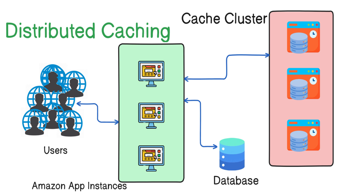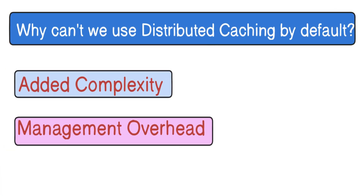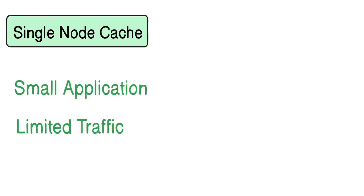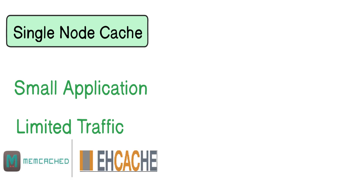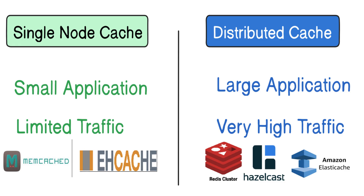So if distributed caching is so good, then why aren't we using it everywhere instead of a single instance cache? Just like other things, distributed caching also has specific use cases. It is similar to whether you should use a monolithic application architecture or microservices. Microservices are great but come with great complexity to manage. Similarly, distributed caching is great but comes with added complexity and management. If your application is small with limited traffic, a single node cache like Memcached or EhCache might be enough. But for high-traffic systems like Netflix, Amazon, or Facebook, a distributed caching system like Redis Cluster, Hazelcast, or Amazon ElastiCache is the way to go.